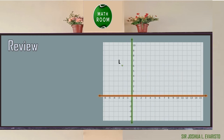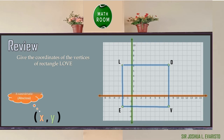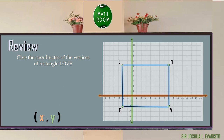Let's have a quick review. Give the coordinates of the vertices of rectangle L-O-V-E. To find the coordinates of the vertices, we need to remember that the set of ordered pairs is in the form of X, Y, where X is the X-coordinate or abscissa, and Y is the Y-coordinate or ordinate. The coordinates of point L are negative 2 comma 6, since negative 2 is the X-coordinate and 6 is the Y-coordinate.